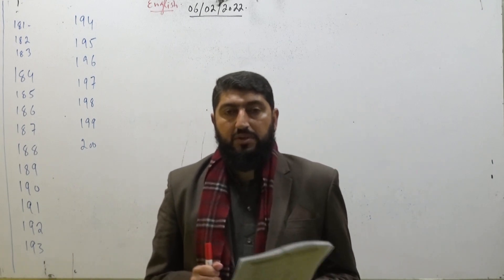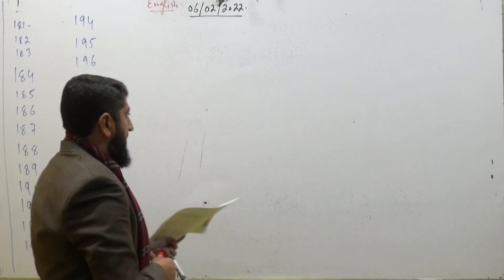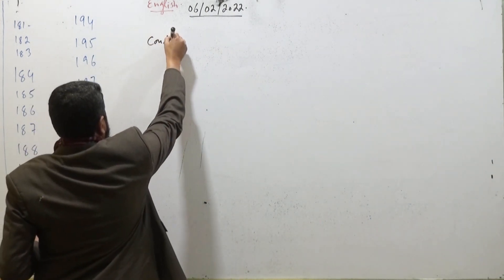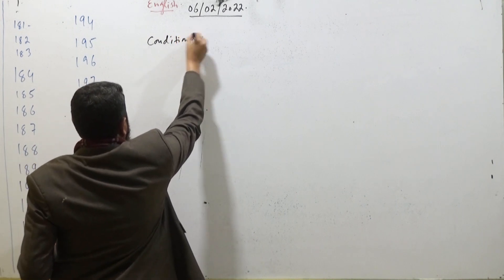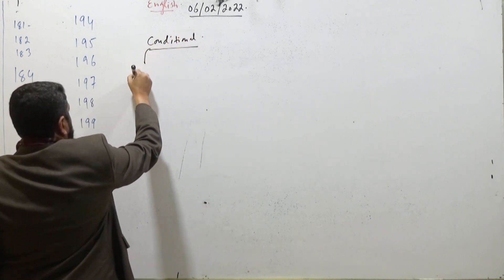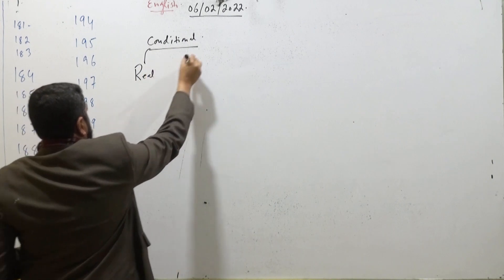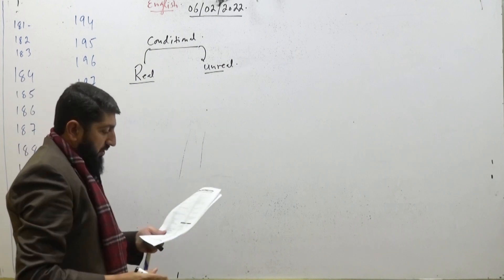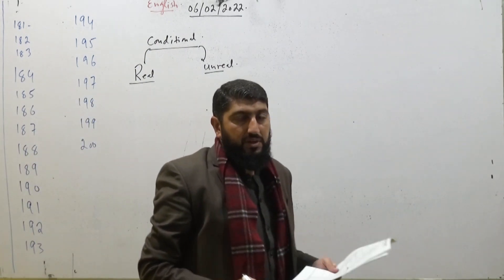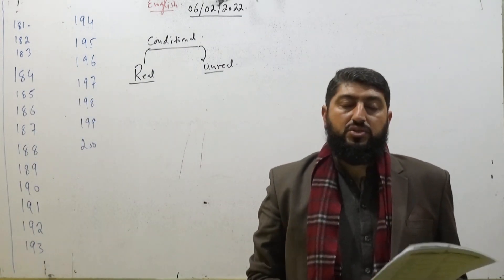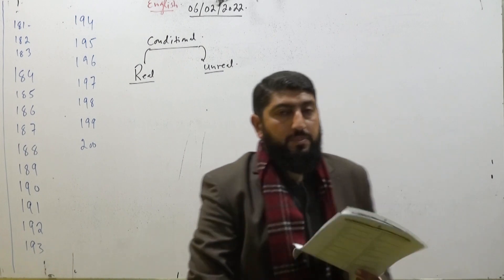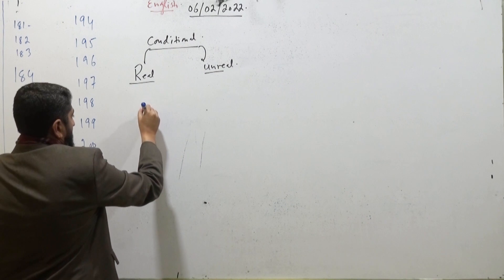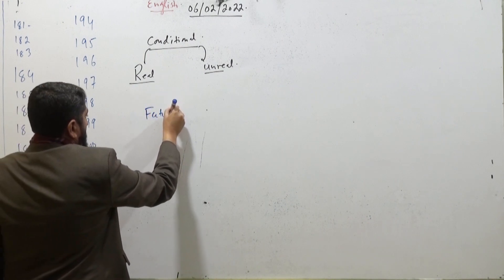Now you have to see here: if it is conditional, we have two types — one is real and another is unreal. If you have this structure, this structure is a real structure.